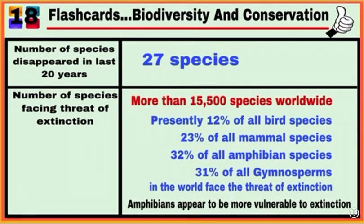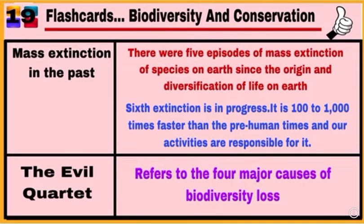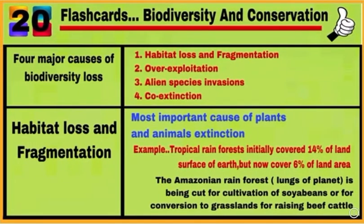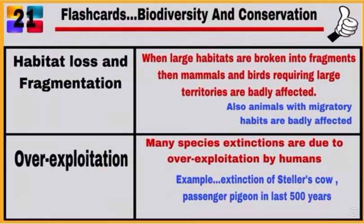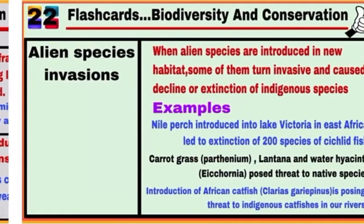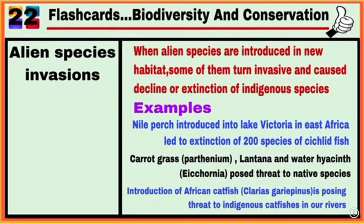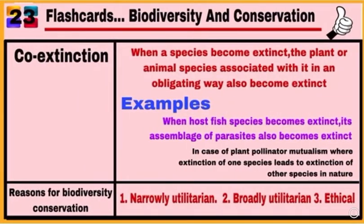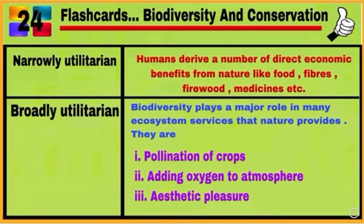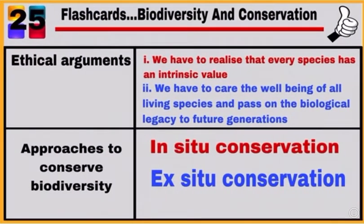Cards 18, 19, 20 — 4 Major Causes of Biodiversity Loss. Cards 21, 22, 23, 24 — Reasons for Biodiversity Conservation. Card 25 — Approaches to Conserve Biodiversity.